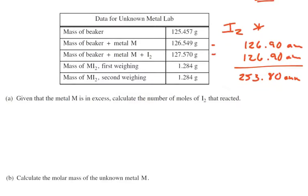And if we know the mass of the iodine, we can turn it into the moles of the iodine using the molar mass. Keep in mind, this is I2, so we're going to have to double. I got the 126.90 from the periodic table in the test and doubled it. So iodine, I'm going to do 127.570 grams minus 126.549.